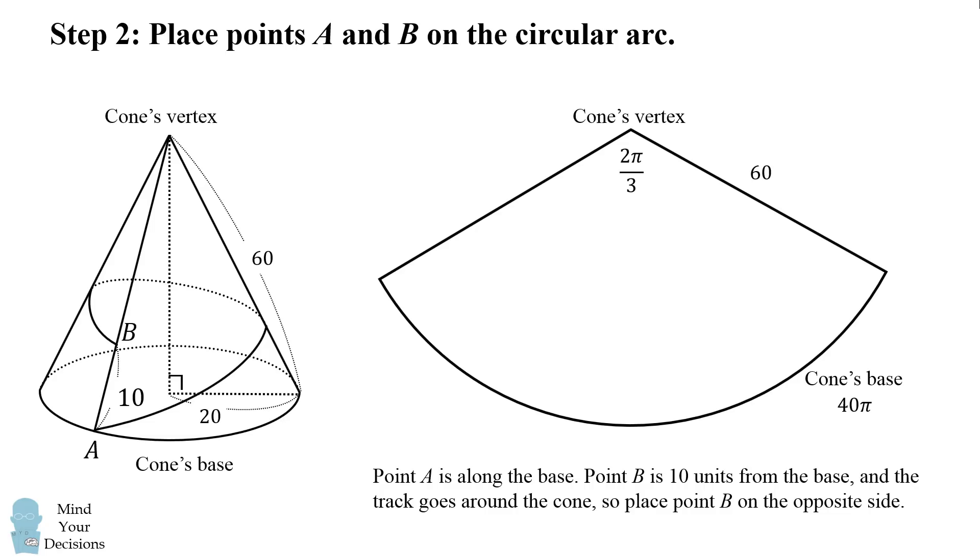Point B is 10 units from the base and the track goes around the cone. So point B is going to be on the opposite side of where we place point A. So let's place point A on the right-hand side of the circular arc. We want to place point B on the other side of the circular arc and 10 units away from the base. So it'll be 10 units from the end of the arc and it'll be 50 units from the vertex because the radius is 60.